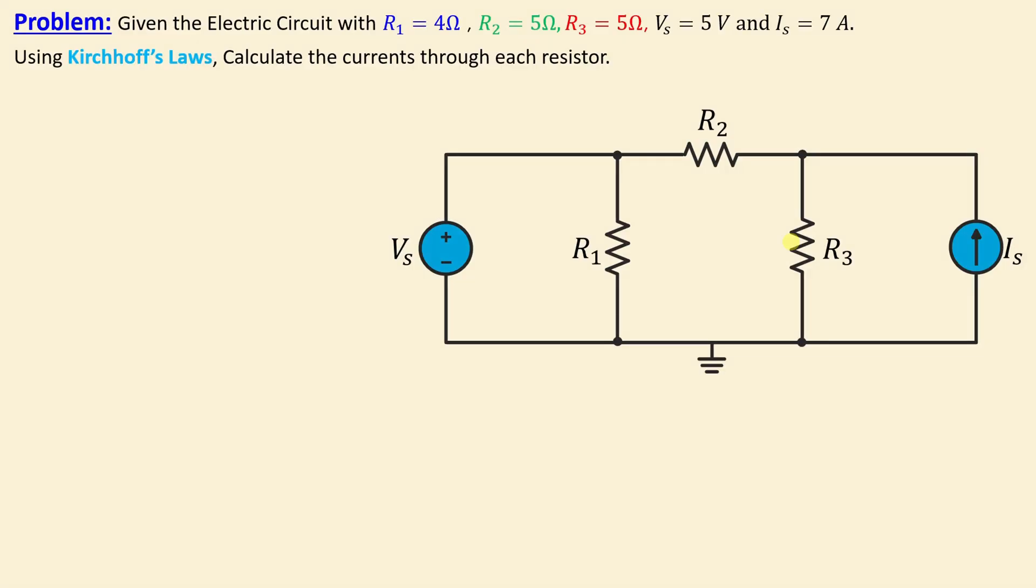Given the electric circuit with R1 is 4 ohms, R2 is 5 ohms, R3 is 5 ohms and we have two sources, one is voltage source of 5 volt and the other one is current source of 7 amps. The question now is using Kirchhoff's law to calculate the current through each resistor.